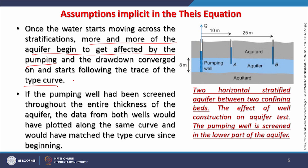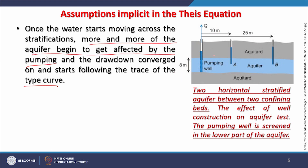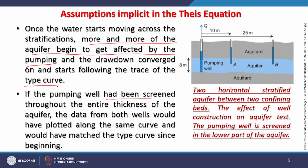If the pumping well had been screened throughout the entire thickness of the aquifer, data from both observation wells would have plotted along the same curve and matched the type curve from the beginning. But since the screen does not cover the entire aquifer thickness, this becomes another challenging situation.